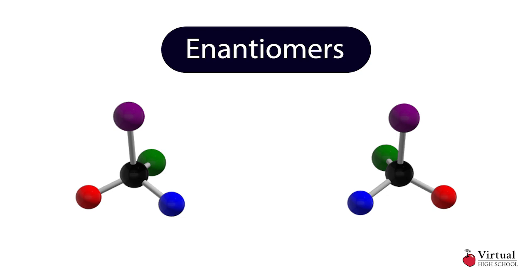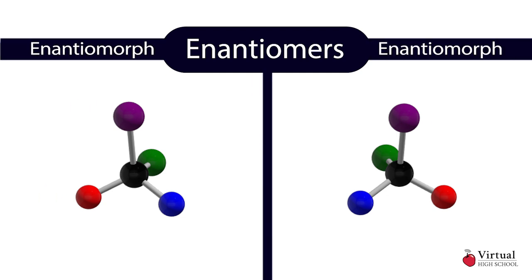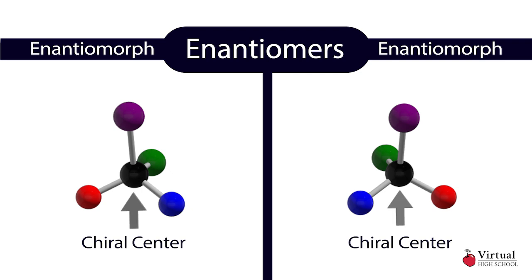Each mirrored molecule is called an enantiomorph. Enantiomers must have at least one chiral center — a central atom around which the geometry of the enantiomorphs differs.